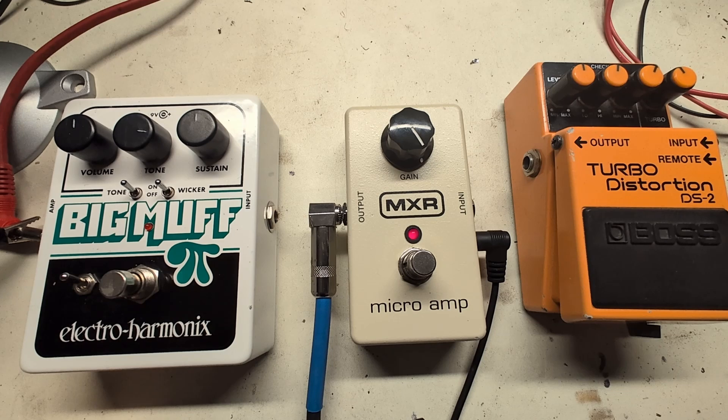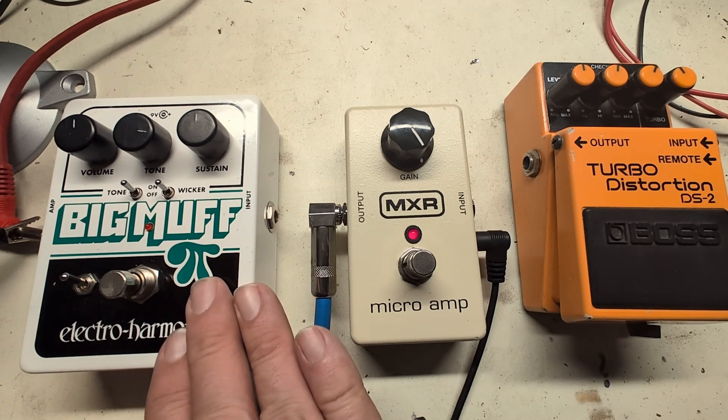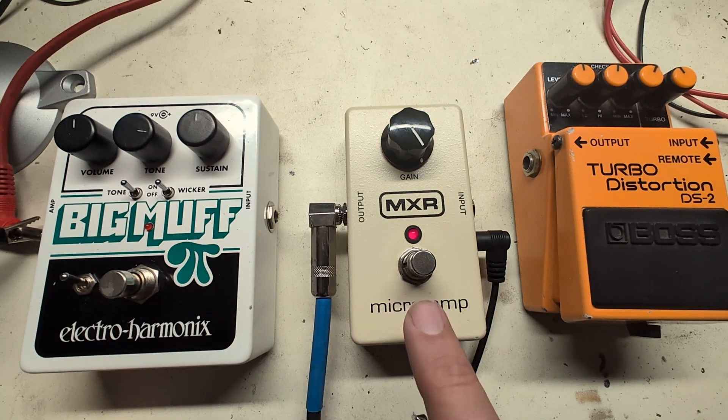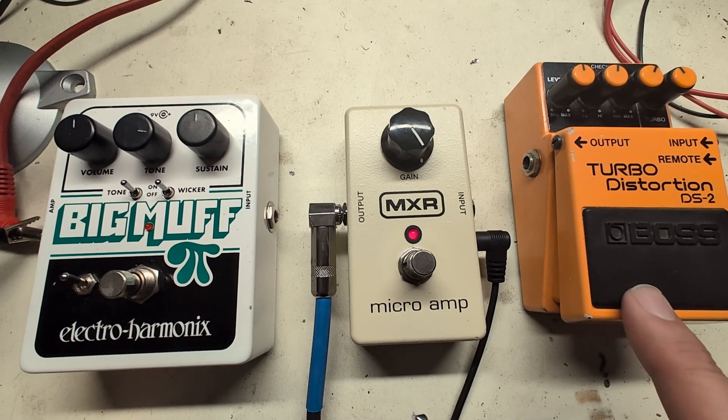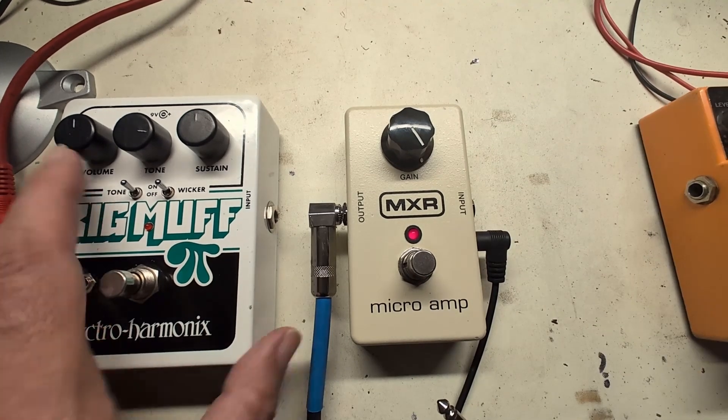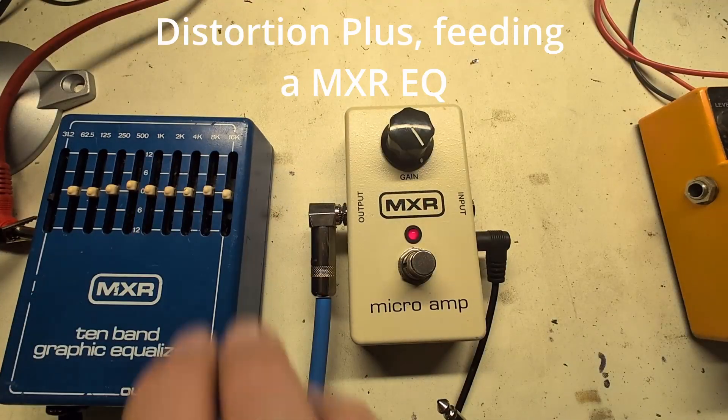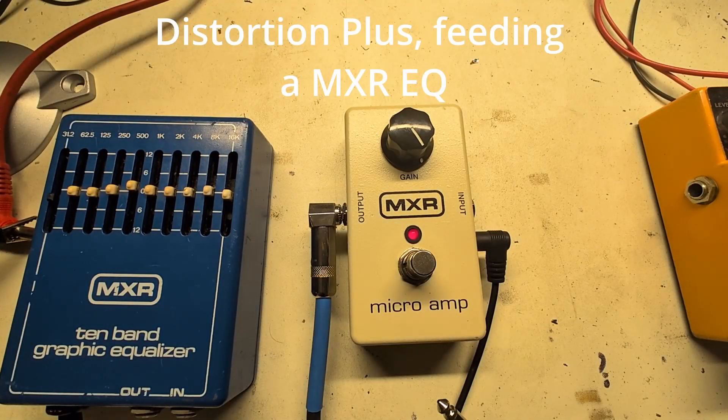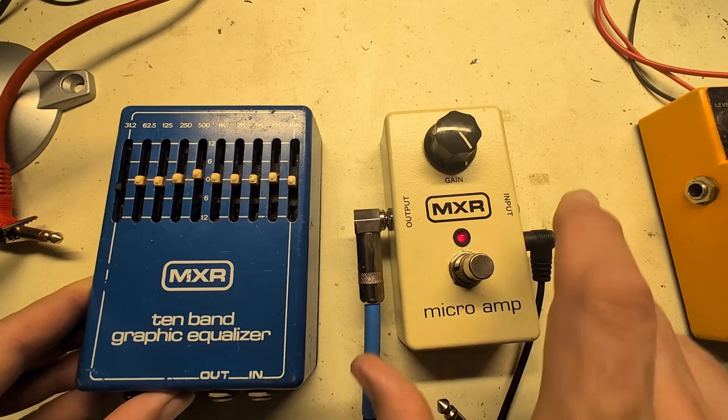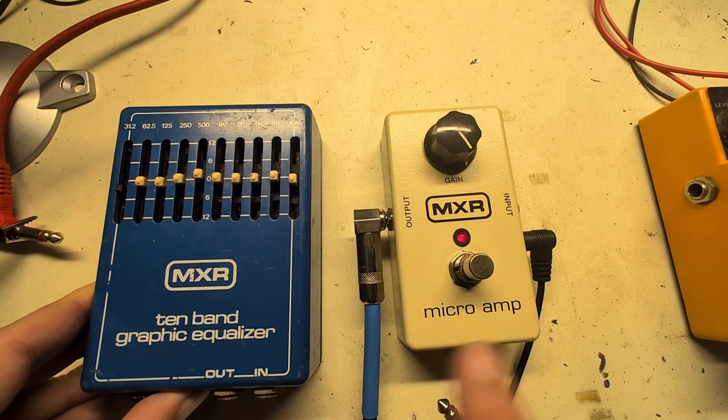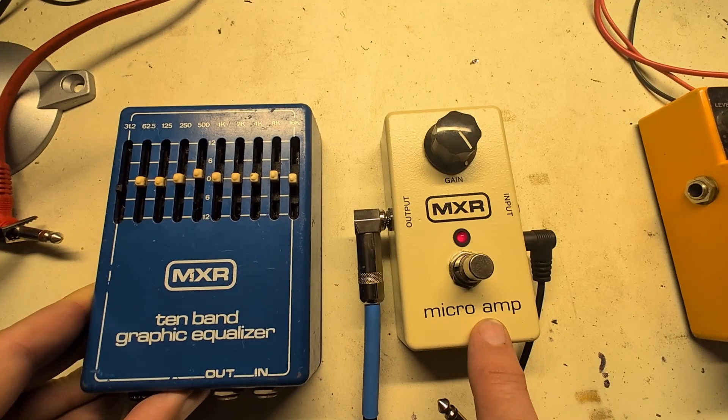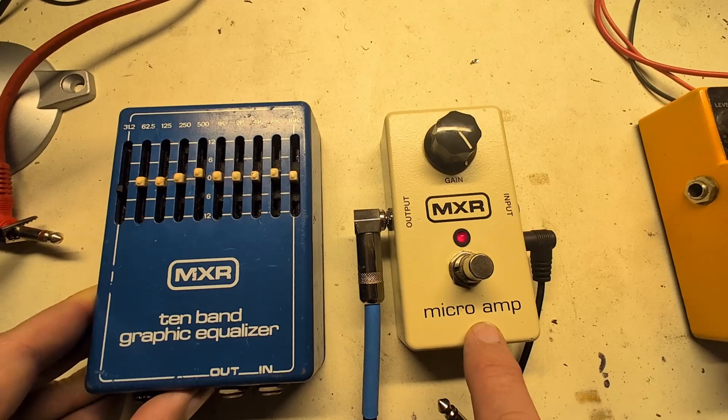John Frusciante's board looks something like this. He has a Big Muff but I think it's a more vintage one than this one. He has the MXR Micro Amp and then he has a couple of DS2s. What Randy Rhodes has is essentially a Micro Amp feeding an MXR 10 band EQ. So we'll set up the EQ later, but first let's get on and modify this guy so it can be a Distortion Plus.